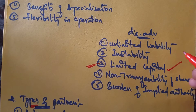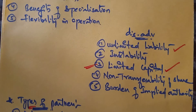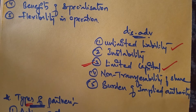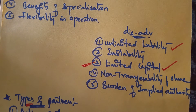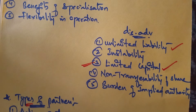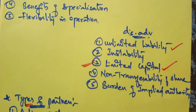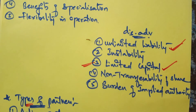Now let us go through the disadvantages. The first disadvantage is unlimited liability. A partner's liability is personal, individual, and joint and several. Their personal properties will be in danger while discharging debts. Just like a sole trader, partners' liability is also unlimited — if something goes wrong, partners may lose both their personal properties as well as business properties.